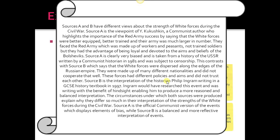This contrasts with Source B, which says White forces were dispersed along the edges of the Russian Empire, made up of many different nationalities who did not cooperate well. These forces had different policies and aims and did not trust each other. Source B is the interpretation of historian Philip Ingram writing in a GCSE history textbook in 1997. Ingram researched this event and wrote with the benefit of hindsight, enabling him to produce a reasoned and balanced interpretation. The circumstances under which both sources were produced explain why they differ so much. Source A is the official Communist version displaying bias, while Source B is a balanced, reflective interpretation.